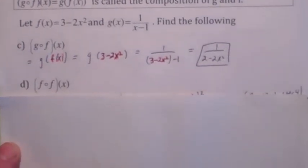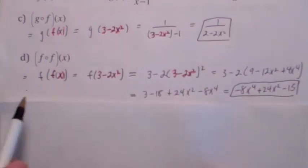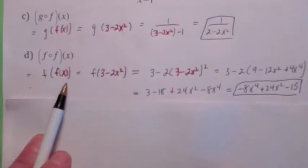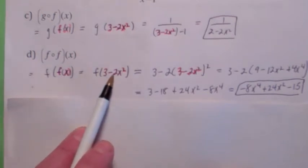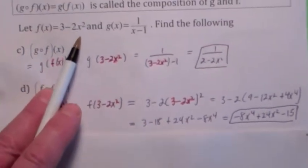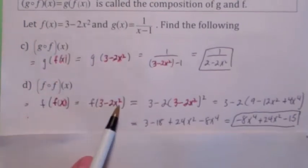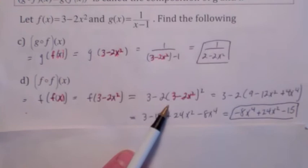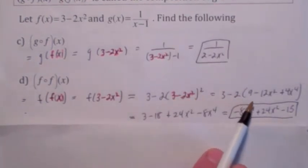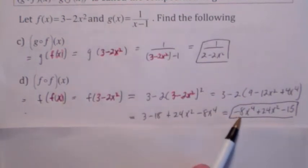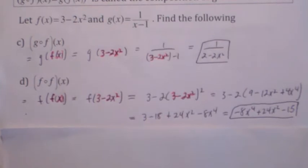You could even compute f circle f of x, which is defined to be f of f of x. You first compute f of x, which is 3 minus 2x squared. Now you go back to the formula for f of x, and wherever there's an x, you replace x with 3 minus 2x squared. When you simplify that carefully, you multiply it out and distribute the negative 2, combine like terms, and you get negative 8x to the 4th plus 24x squared minus 15.